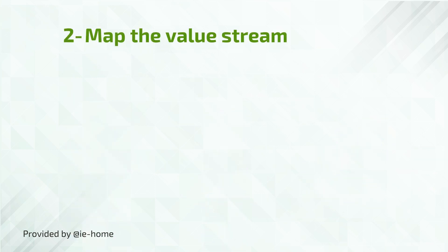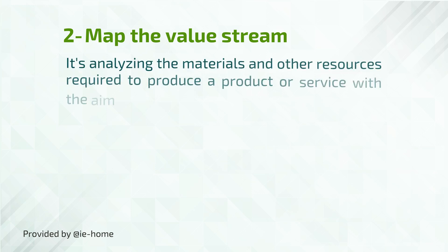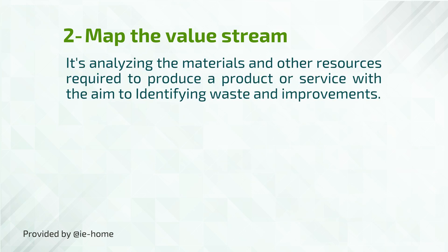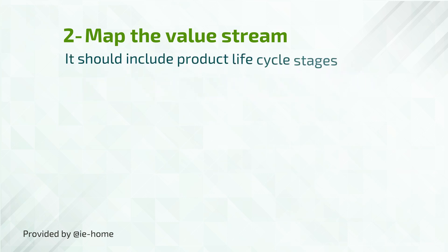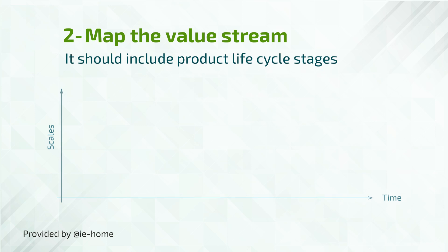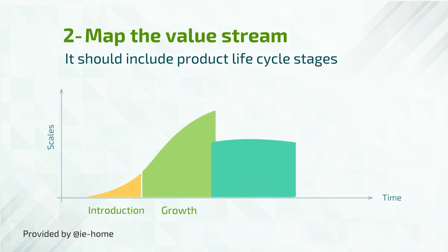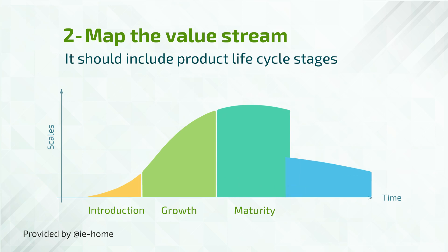Principle 2: Map the value stream. It's analyzing the materials and other resources required to produce a product or service, with the aim of identifying waste and improvements. It should include product life cycle stages like: introduction stage, growth stage, maturity stage, and decline stage.